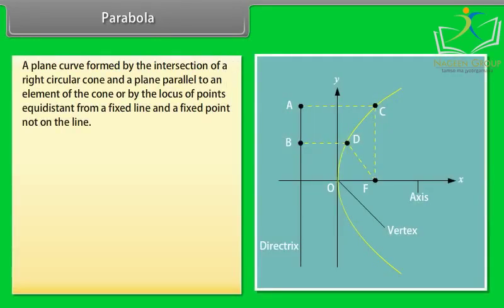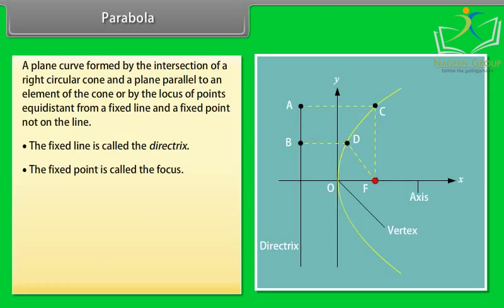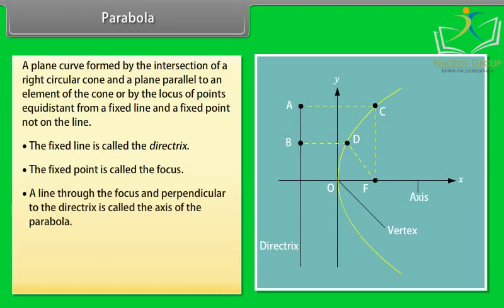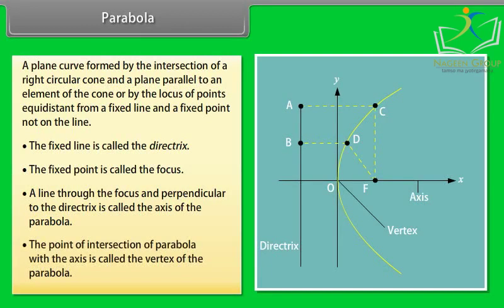A parabola is a plane curve formed by the intersection of a right circular cone and a plane parallel to an element of the cone, or by the locus of points equidistant from a fixed line and a fixed point not on the line. The fixed line is called the directrix and the fixed point is called the focus. A line through the focus and perpendicular to the directrix is called the axis of the parabola. The point of intersection of the parabola with the axis is called the vertex.